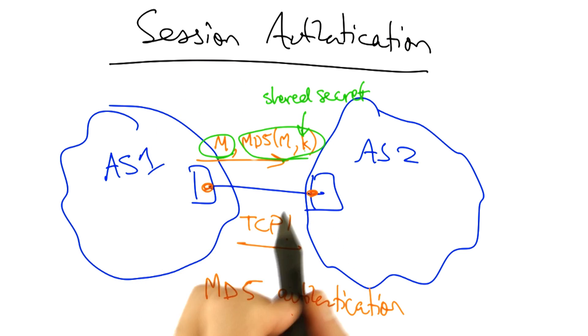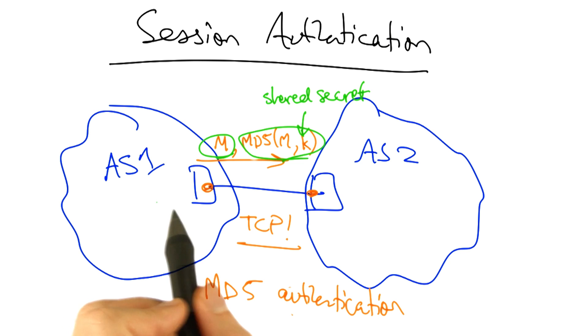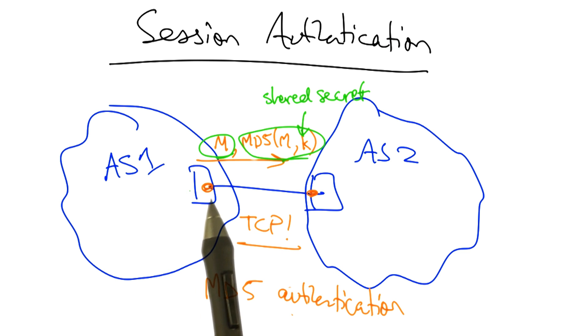Now this key distribution is manual. The operator in AS1 and the operator in AS2 must agree on what that key is, and typically they do that out of band, for example, by calling each other on the phone and manually setting that key in the router configuration. But once that key is set, all messages between this pair of routers is authenticated.